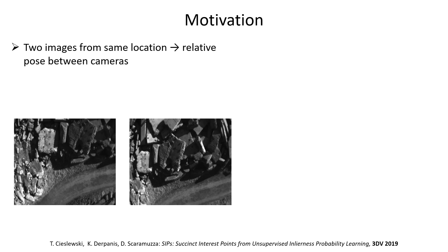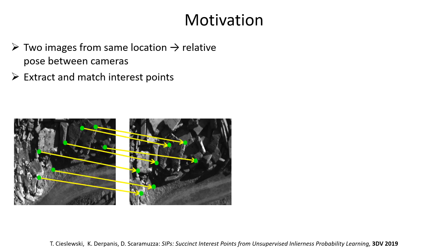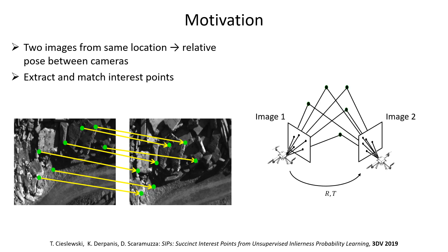If you are given two images from the same location and we want to establish the relative pose between the cameras, the typical approach is to extract interest points in both images and match them. These matches can then be passed to an algorithm that calculates the relative pose. In literature, it seems to be broadly accepted that the standard way to go about this is to extract 500 to 1000 interest points.